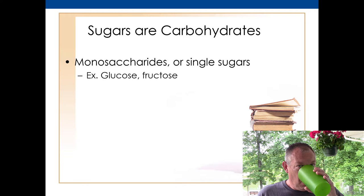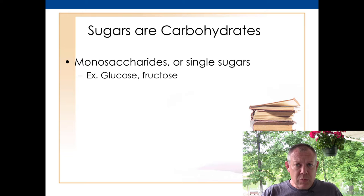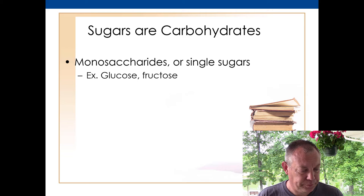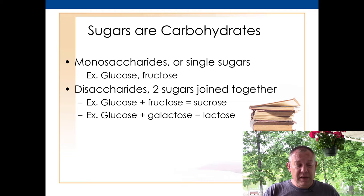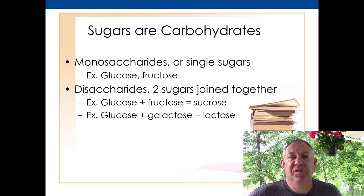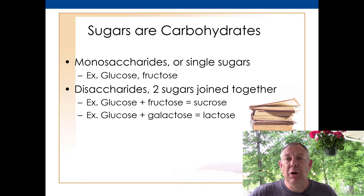Sugars are carbohydrates. The monomer, the building block, is the simple sugar — we call it a monosaccharide. You put a bunch of monosaccharides together to get a polysaccharide or complex carbohydrate. You can also put just two simple sugars together to get a disaccharide. For example, glucose plus fructose makes sucrose — table sugar — and glucose plus galactose makes lactose — milk sugar.